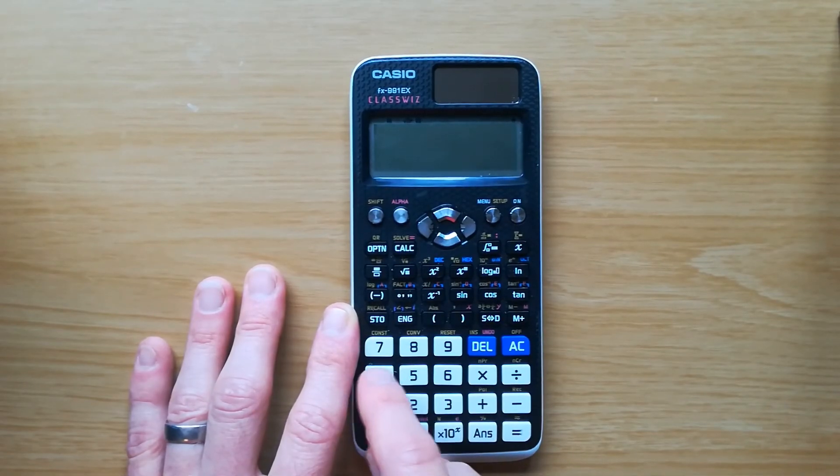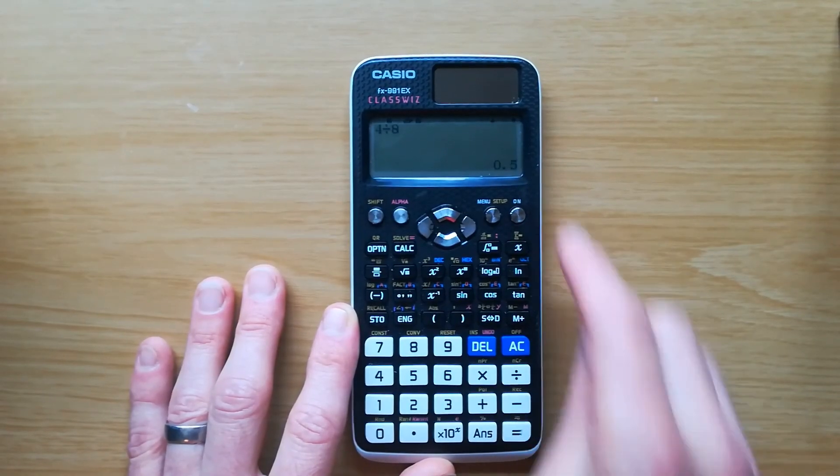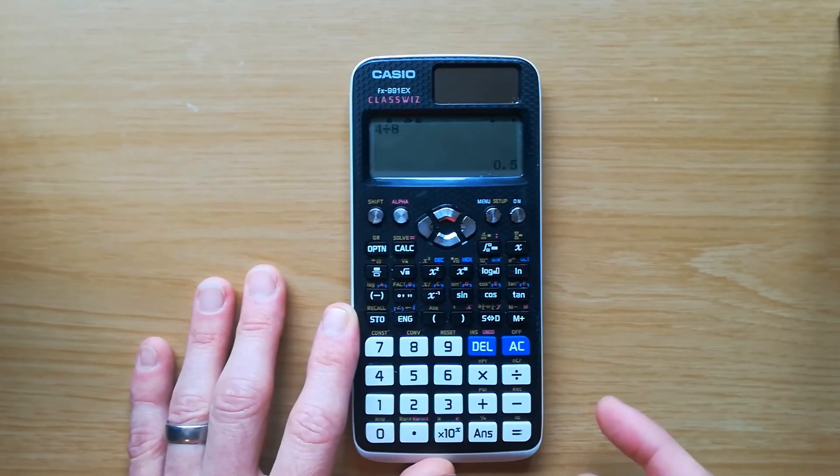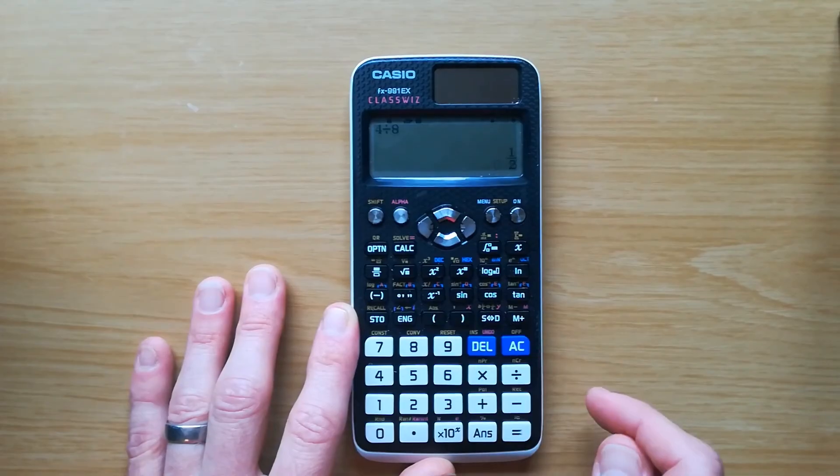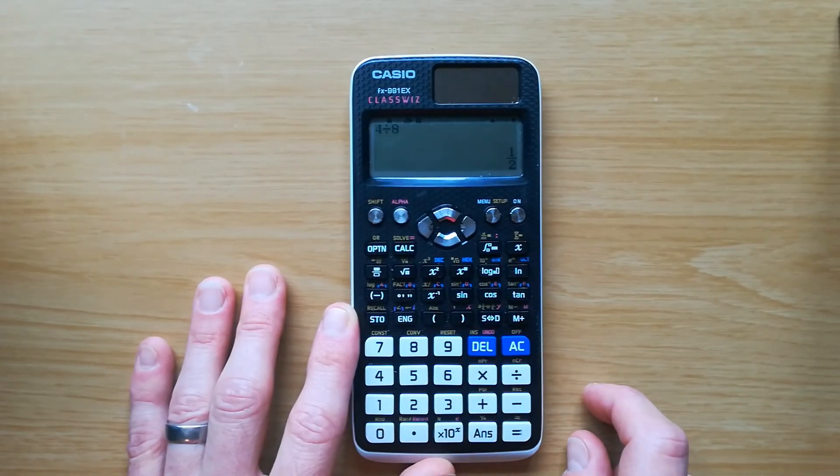But I prefer to keep mine on option two, which just means whenever I type something in I get my answer as a decimal. And I know that if I want to see it as a fraction I just need to press that button there. And that's it for today, thank you.